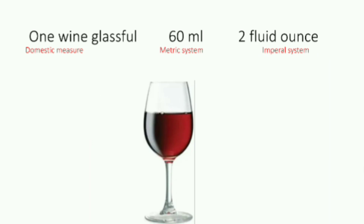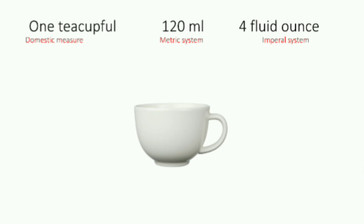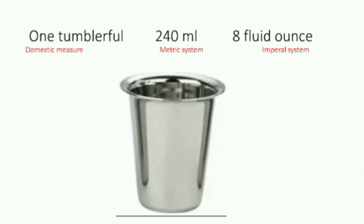One wine glass full is equal to 60 ml in the metric system and 2 fluid ounces in the imperial system. One teacupful is equal to 120 ml in the metric system and 4 fluid ounces in the imperial system. One tumbler full is equal to 240 ml in the metric system and 8 fluid ounces in the imperial system.